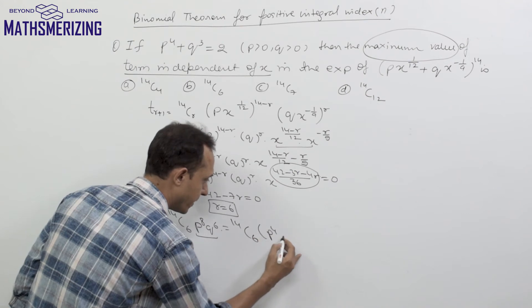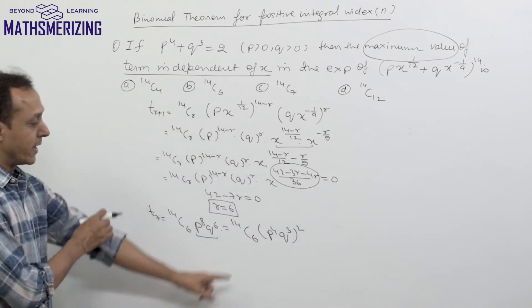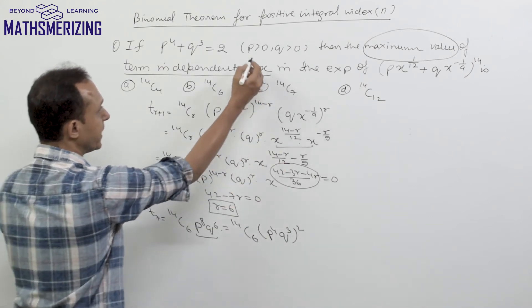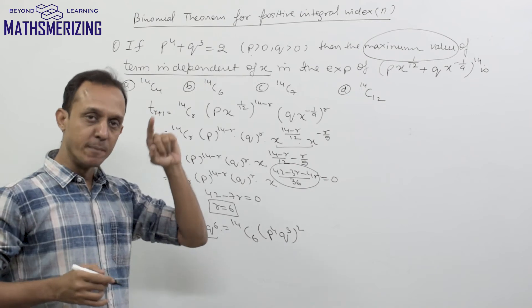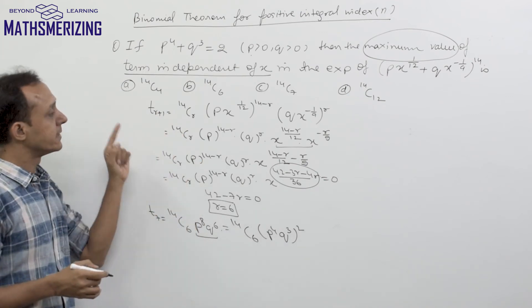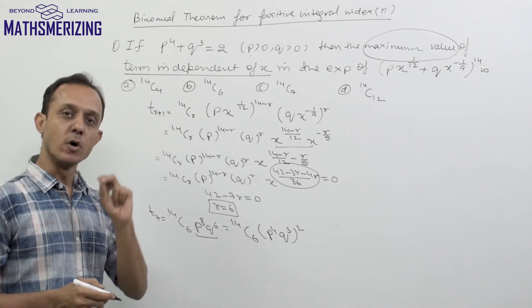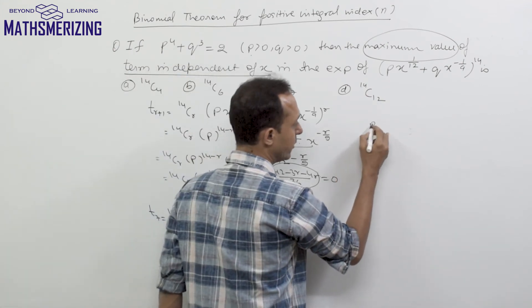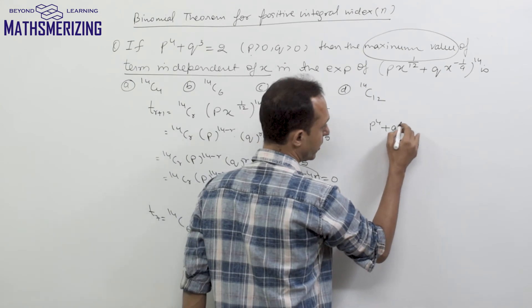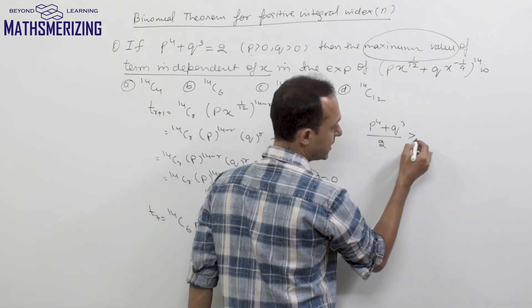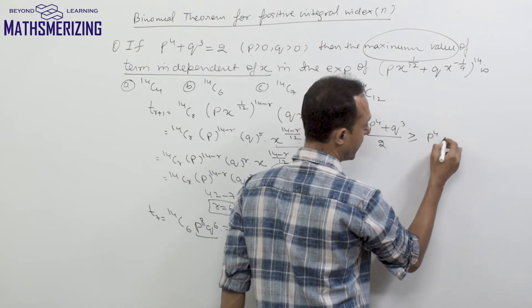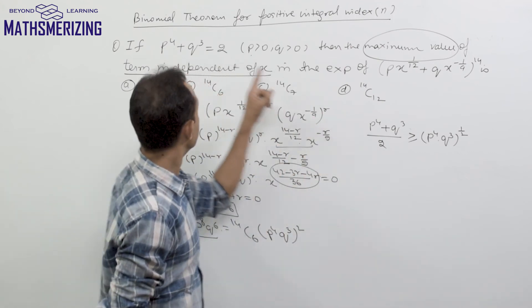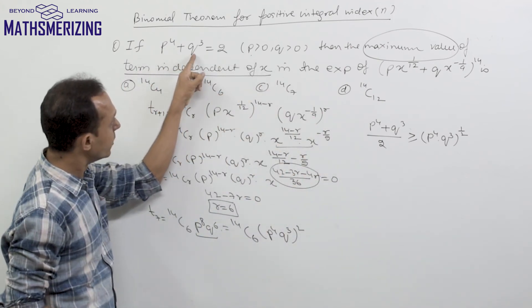This term can be written as 14C6 · (p⁴·q³)². I need to find the maximum value of p⁴·q³. Since p and q are both positive, I use the AM-GM inequality: the arithmetic mean is always greater than or equal to the geometric mean. So (p⁴ + q³)/2 ≥ (p⁴·q³)^(1/2).